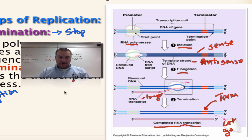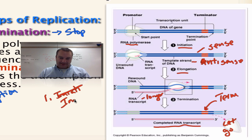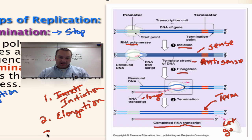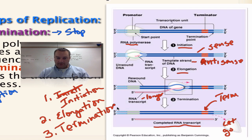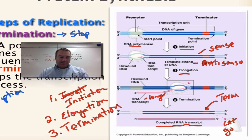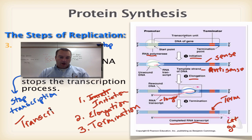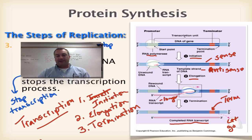So, to recap, we've got three steps to transcription: number one, initiation; number two, elongation; and number three, termination. I-E-T — that's the steps to transcription. That will do it for this episode. Until next time, we'll catch you on the flip side.